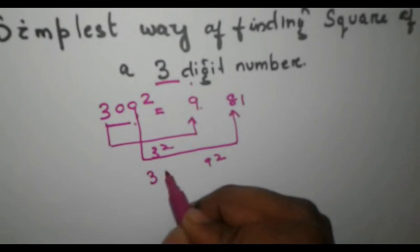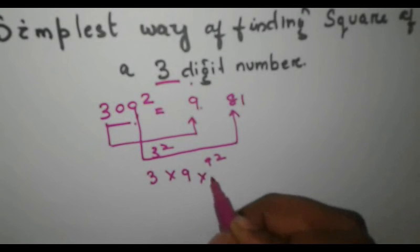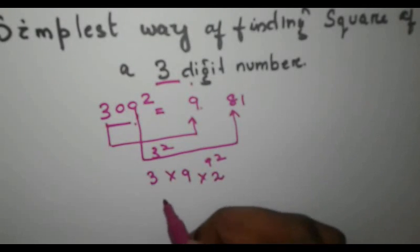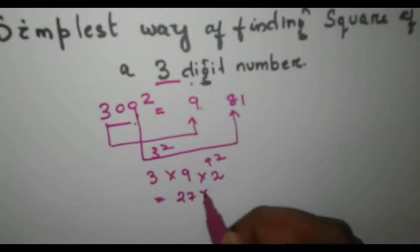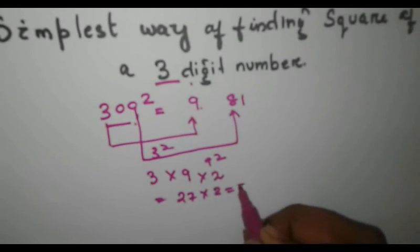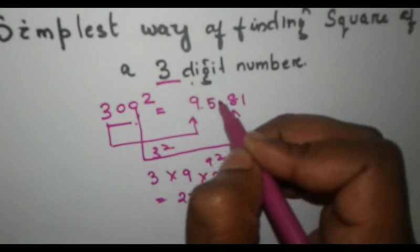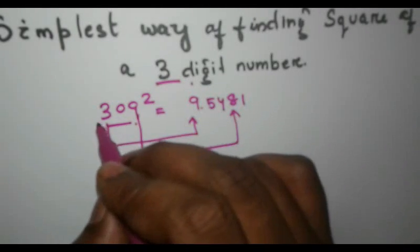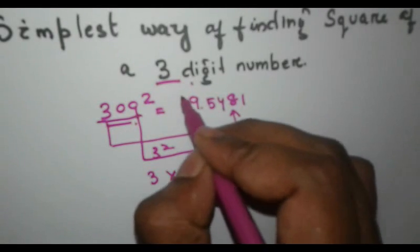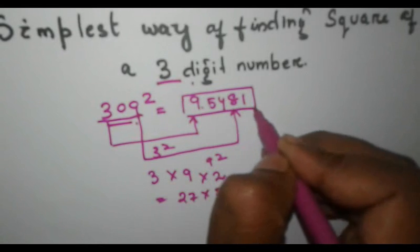You have to multiply 3 into 9 into 2. What will be the result? 27 into 2 is equal to 54. So you have to take 54 and write it over here. So the square of 309 is 95481.